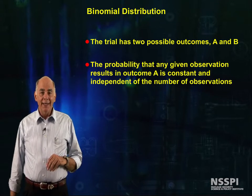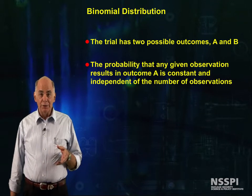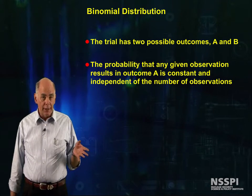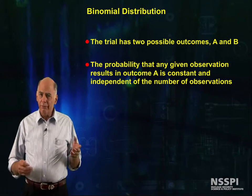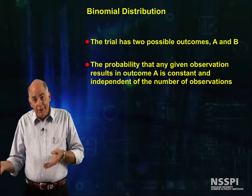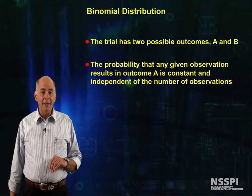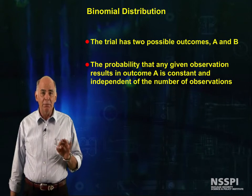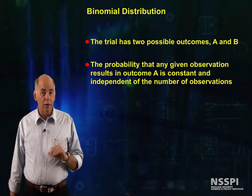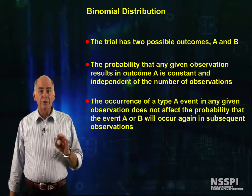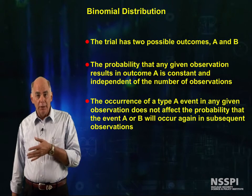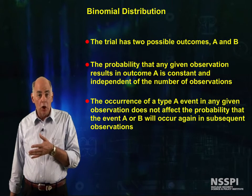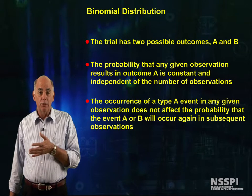The probability that any given observation results in outcome A is constant and independent of the number of observations — think of flipping a fair coin, or radioactive decay. Furthermore, the occurrence of a type A event in any given observation does not affect the probability that event A or B will occur again in subsequent observations.